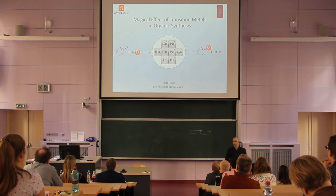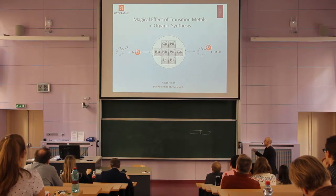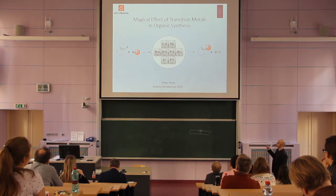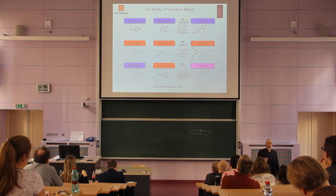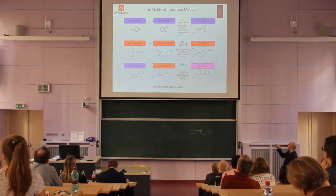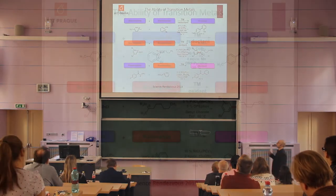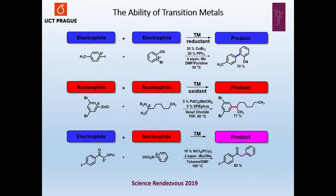In the past, chemists have found many different ways to use transition metals for creating new chemical bonds. Today we are able to make bonds between two molecules both carrying a positive charge using a suitable reducing agent. We are also able to make bonds between two negatively charged molecules in the presence of an oxidant. But today's short lecture will be about cross-coupling reactions between positive electrophiles and negative nucleophiles mediated by transition metals.